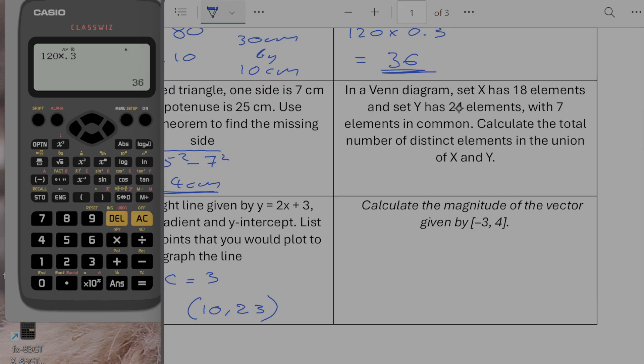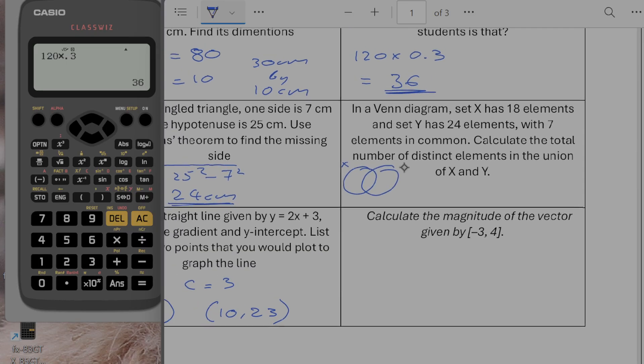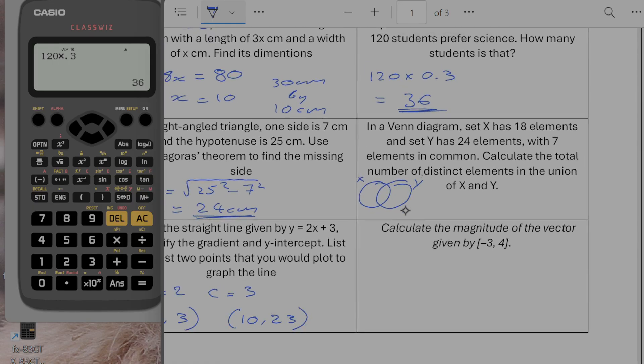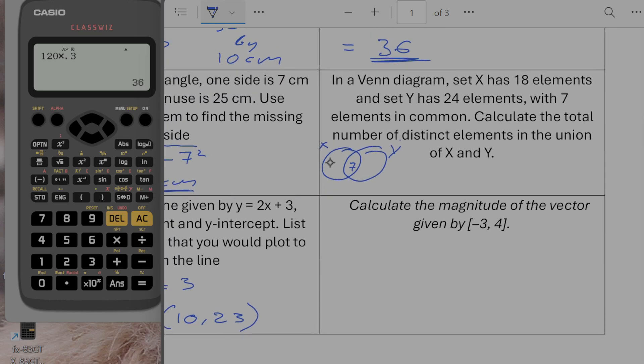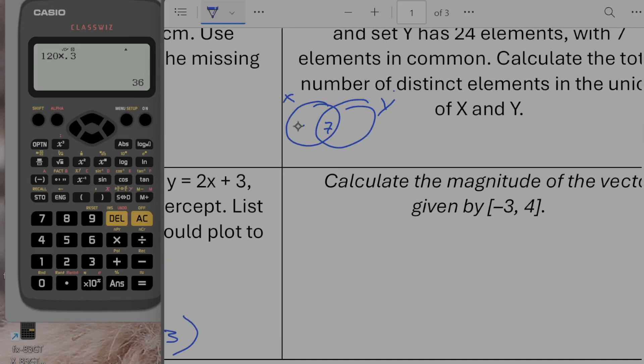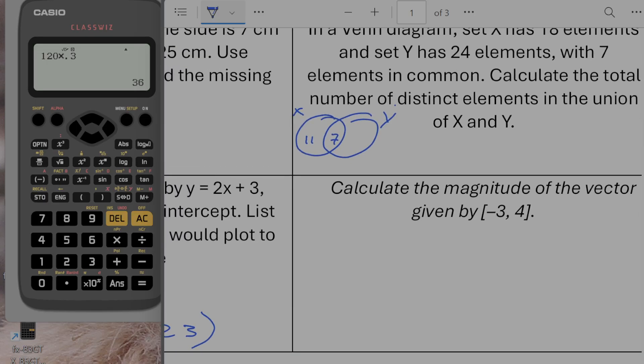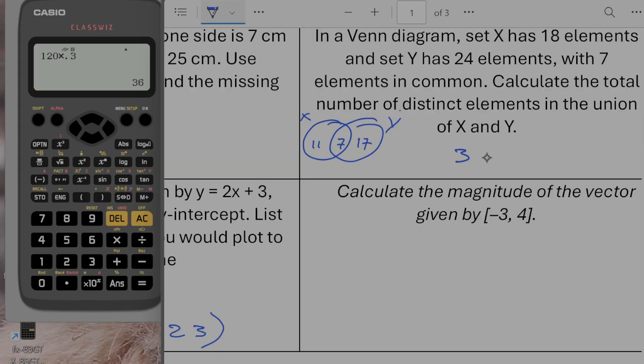In a Venn diagram, set X has 18 elements, set Y has 24 elements with 7 elements in common. Calculate the total number of distinct elements in the union of X and Y. So I'll just draw a very basic, we've got X and Y. So we've got 7 in the intersection. If there are 18 elements in set X that means 11 must go there. And if there are 24 elements in total that must mean that we've got 17 there. So in total we've got 24 plus 11, we've got 35 elements in the union.